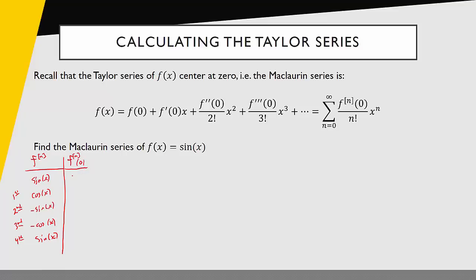I look at the first one, sine of zero is zero. Cosine of zero is one. Sine of zero is zero, so I'll have zero here. Then I have negative cosine of zero, so that's negative one. And then sine of zero is zero again, so that process repeats. So I'm going to plug these values into the formula.